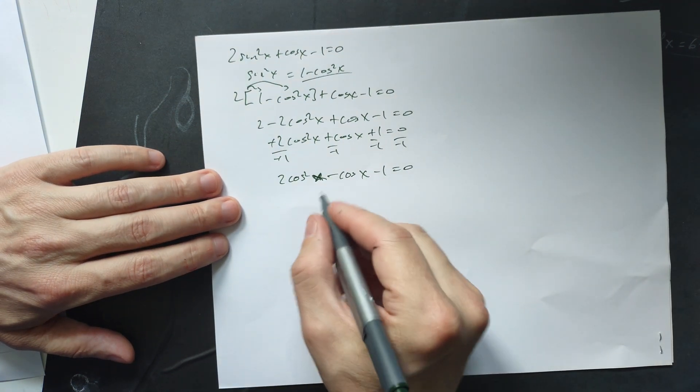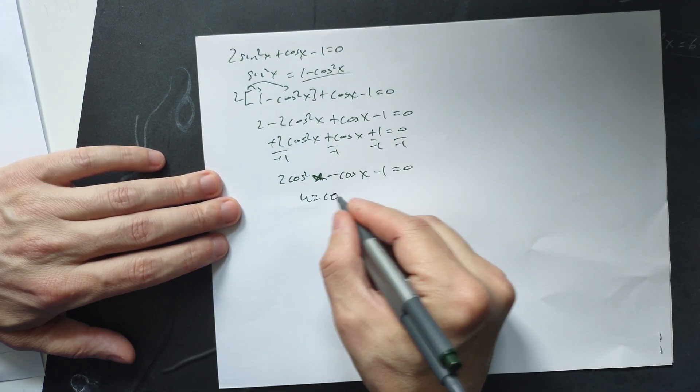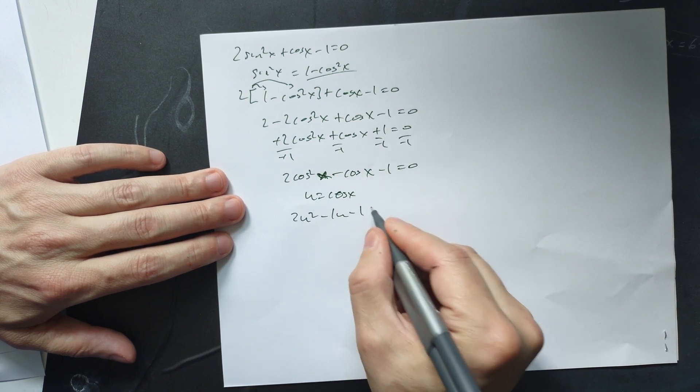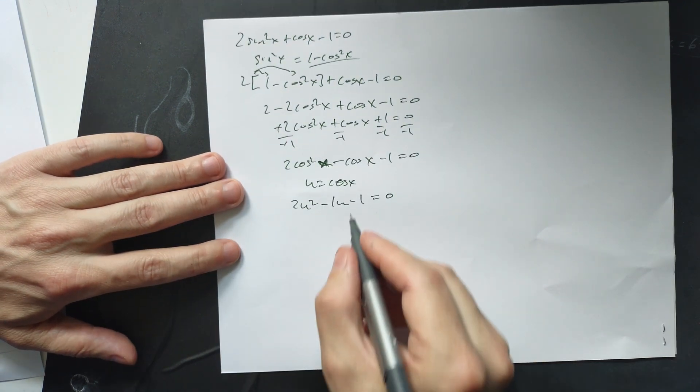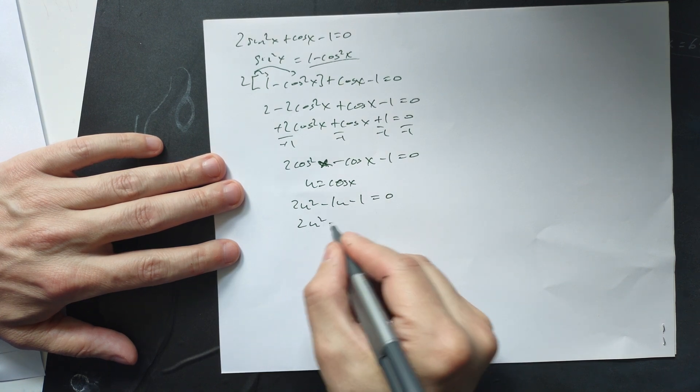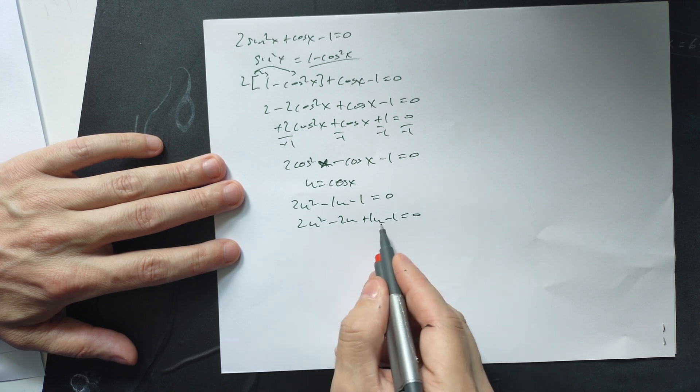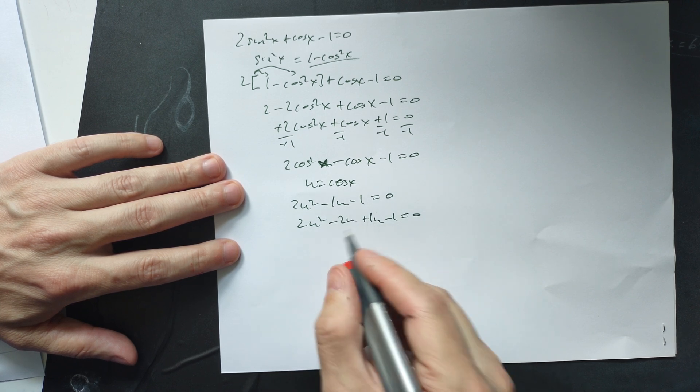Now if you have trouble factoring this, just write u equals cosine x. Use a substitution. So you're going to have 2u squared minus 1u minus 1 is equal to 0. But then you can rewrite the middle as 2u squared minus 2u plus 1u minus 1 is equal to 0 because negative 2u plus 1u is negative 1u. So you're not changing anything.